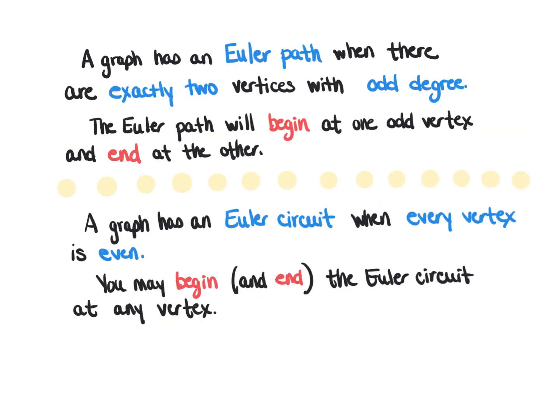To summarize: a graph has an Euler path when there are exactly two vertices with odd degree, and the Euler path will begin at one odd-degree vertex and end at the other. If a graph is going to have an Euler circuit, then every single vertex must have even degree, and you may begin and end at any vertex of your choosing. This should help you quickly identify whether a graph has an Euler path, an Euler circuit, or neither — and also tell you where to begin.